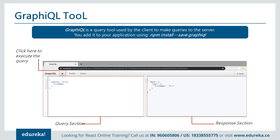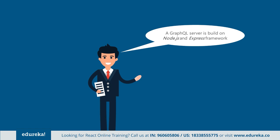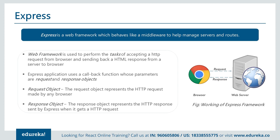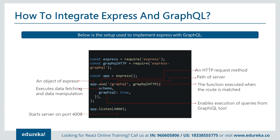You cannot run GraphQL directly in Postman, though the latest Postman versions do have a GraphiQL interface. To test it, you need GraphiQL. A GraphQL server is built on Node.js and Express, which behaves like middleware to help manage services and routes, accepting HTTP requests from the browser and sending back responses. Express applications use callback functions with request and response objects. Here we define one route — the app object from Express, the 'use' method, 'graphql' as the path, 'graphql-http' as the route handler — and set graphiql to true so we can see the interface.